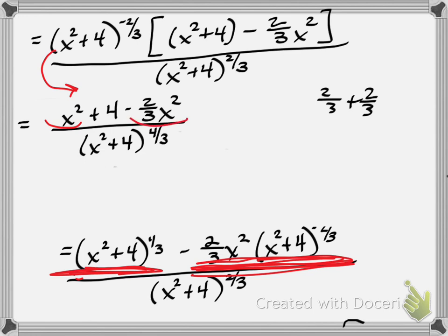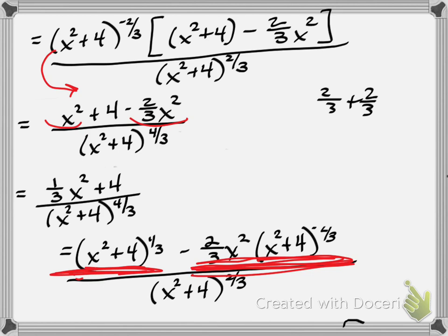Now let's combine like terms. Positive 1 and negative two-thirds gives us positive one-third, so we have one-third times x squared plus 4, all over x squared plus 4 to the four-thirds. The book is not going to like leaving that one-third fraction in the middle of another fraction.